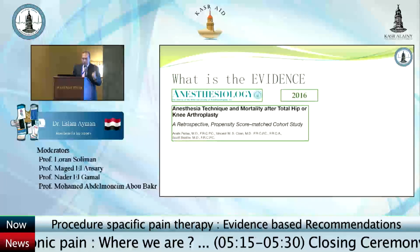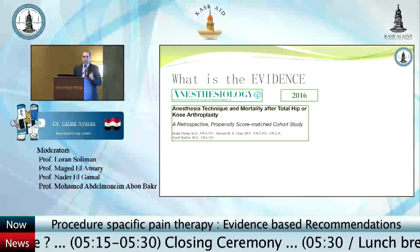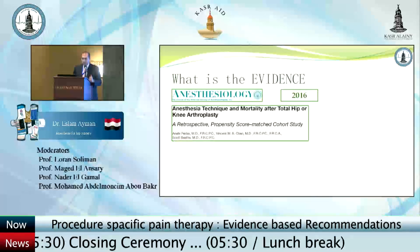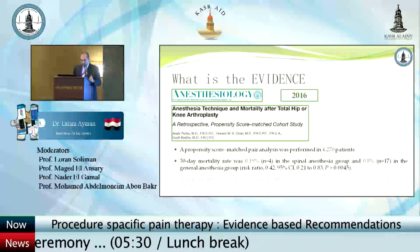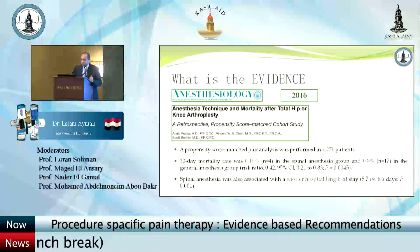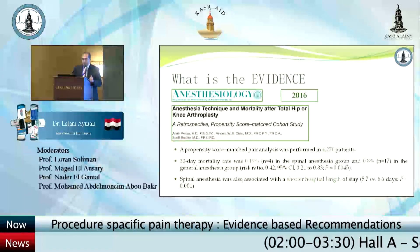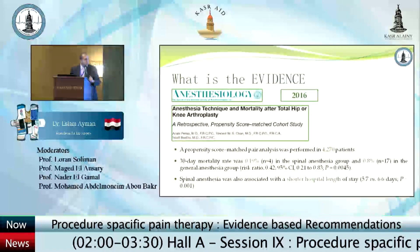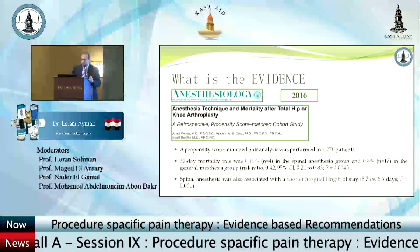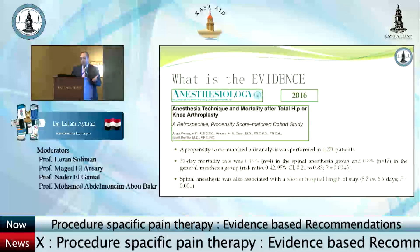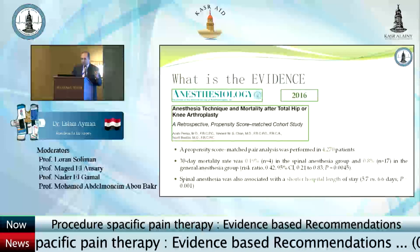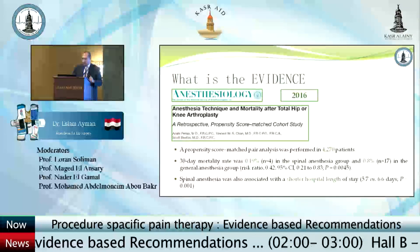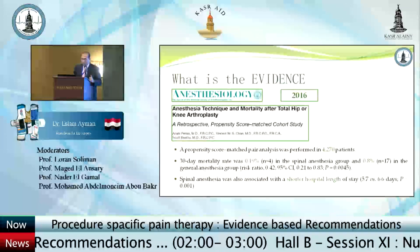In Anesthesiology in 2016, a propensity score-matched pair analysis of 4,000 patients studied anesthesia technique and mortality after total hip or hemi-arthroplasty. Day-of-death mortality was 0.19% in the spinal anesthesia group versus 0.8% in the general anesthesia group. Spinal anesthesia was also associated with a shorter hospital stay: 5.7 days versus 6.6 days compared to general anesthesia.